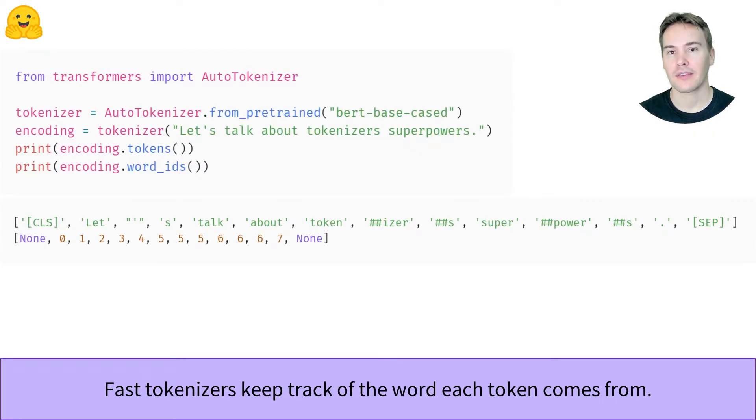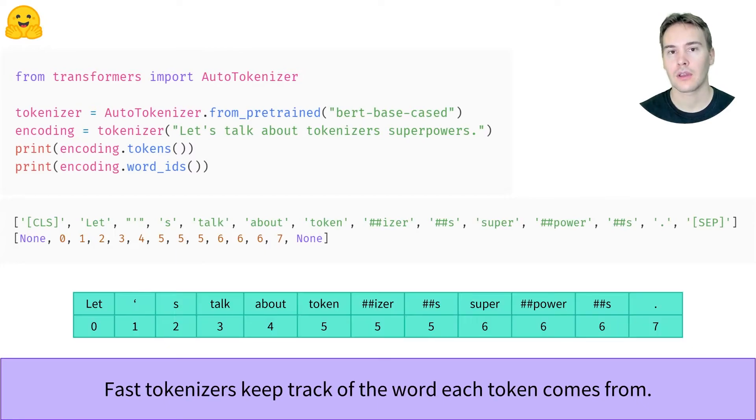Thankfully, the fast tokenizer keeps track of the word each token comes from, with the word IDs method you can use on the output. The output is not necessarily clear, but assembled together in a nice table like this, we can look at the word position for each token.